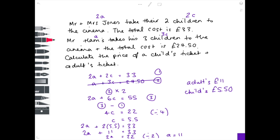And now finish your answer by saying that the adult's ticket price is £11 and the child's is £5.50. Don't forget to finish your answer.